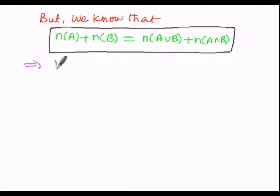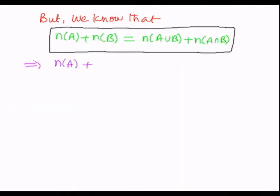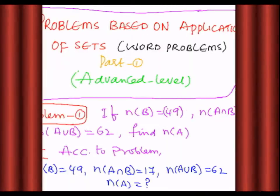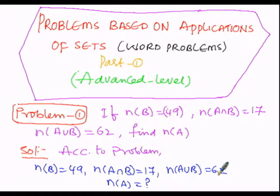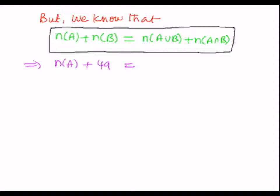That implies N of A is unknown, plus N of B as per the problem is 49, equals N of A union B plus N of A intersection B. So N of A union B is 62 and N of A intersection B is 17. Therefore N of A plus 49 equals 62 plus 17.